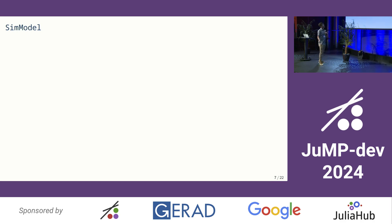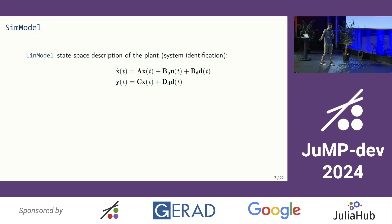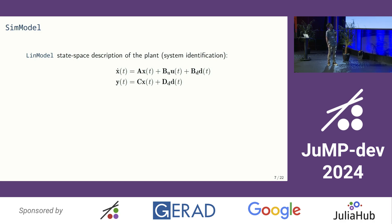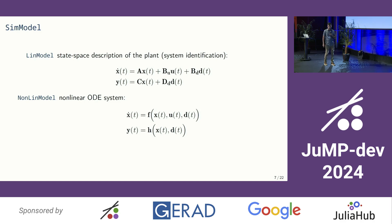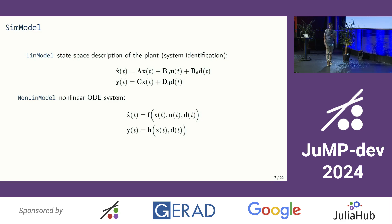The types in the package: the first abstract type is SimModel for simulation model, with two concrete types. First is LinearModel — the state-space description of the plant, which most of the time comes from system identification. That's regression applied to dynamical systems: you use input-output data to find an equation. You just give the five matrices to the constructor and that's it. Most first-principle models based on physics will be nonlinear ODE systems. For NonLinModel, you create the f and h functions as normal Julia functions and give them to the constructor.